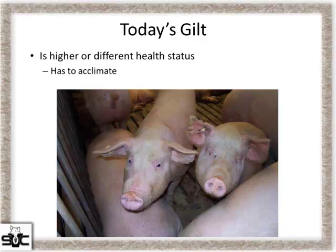Today's gilt certainly has a higher health status, and we want that. But gilts entered into herds at a mature age have a lot of bugs to acclimate to. Some bacterial pathogens cause dramatic arthritis — damage we may not see in that first or second parity, but it can eventually catch up to those animals and lead to lameness. Sows end up euthanized or dying from joint infections later down the road.